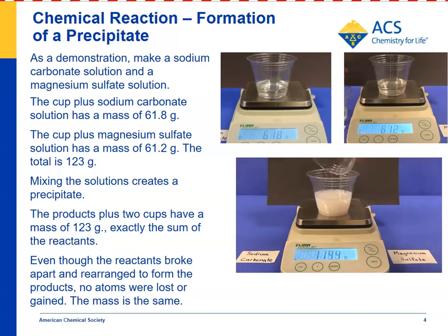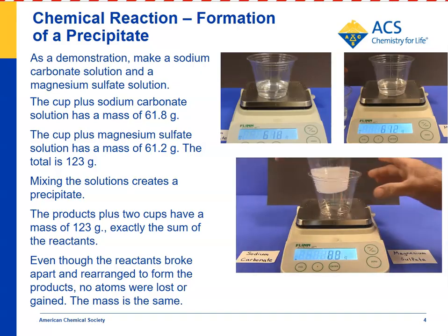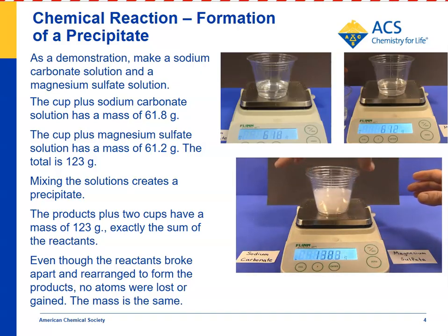Now you have both reactants combined, and you have to also add both cups, because we took into account the weight of the cups before. And 61.8 grams plus 61.2 grams should be 123 grams — which it is. So even though there was a chemical change, no molecules of sodium carbonate or magnesium sulfate were gained or lost. They just recombined to form the precipitate, so the mass stays the same.